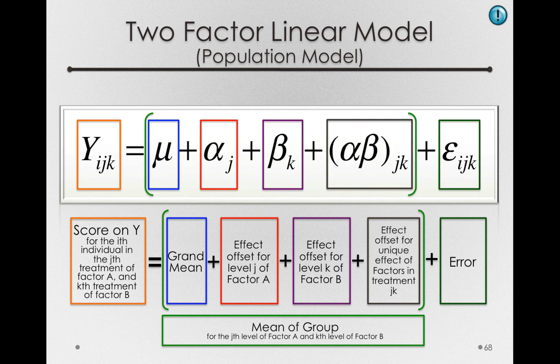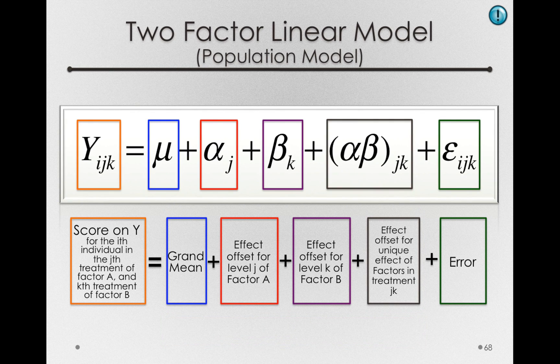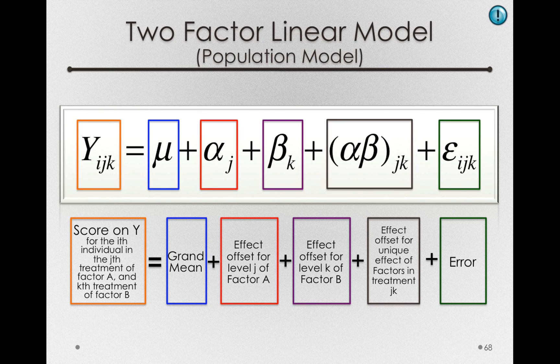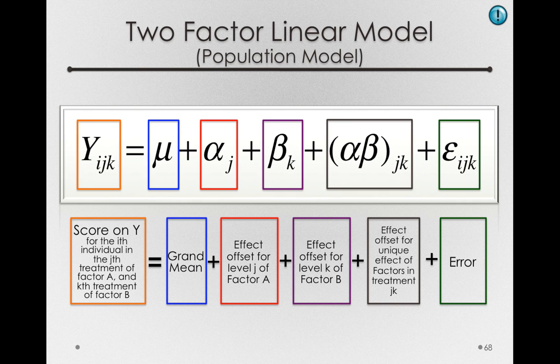So that interior portion is just representing those group means we already saw. But what's magical about the linear model is we've decomposed it into separate pieces that represent important things about the world we want to test. So those alphas, betas, and the alpha-betas will actually represent important tests, the ones we've already seen: the overall effect of factor A, the overall effect of factor B, and some interaction between the factors.